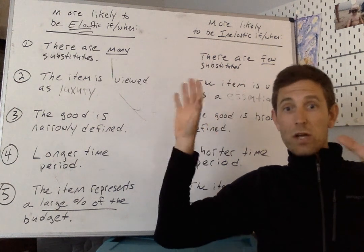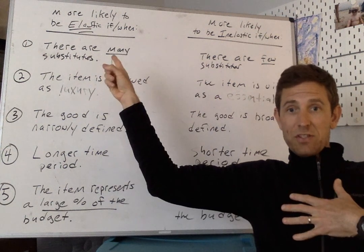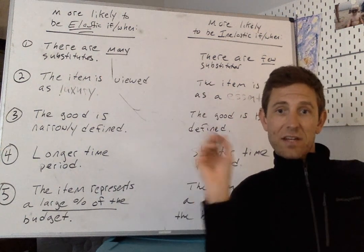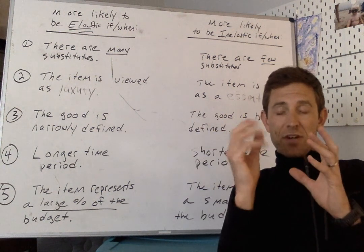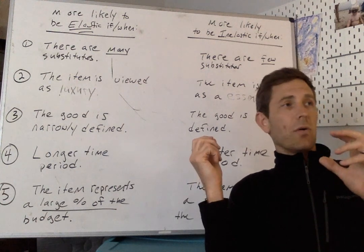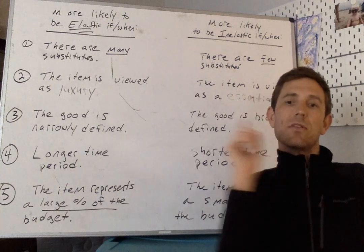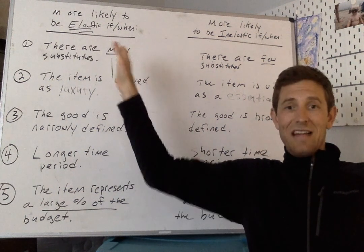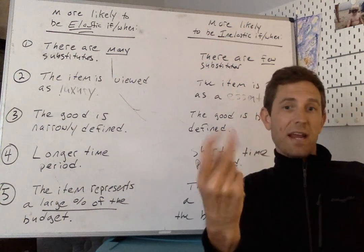Okay, so real quickly before jumping in, elastic demand like we see over here, that means people are really sensitive to price changes. The price goes up, the price goes down, people change the amount that they're going to buy by a lot. So as an example, maybe something like buying clothing. That might be an example of something here where we see elastic demand. It goes on sale and people are much more likely to buy a new pair of pants or something.